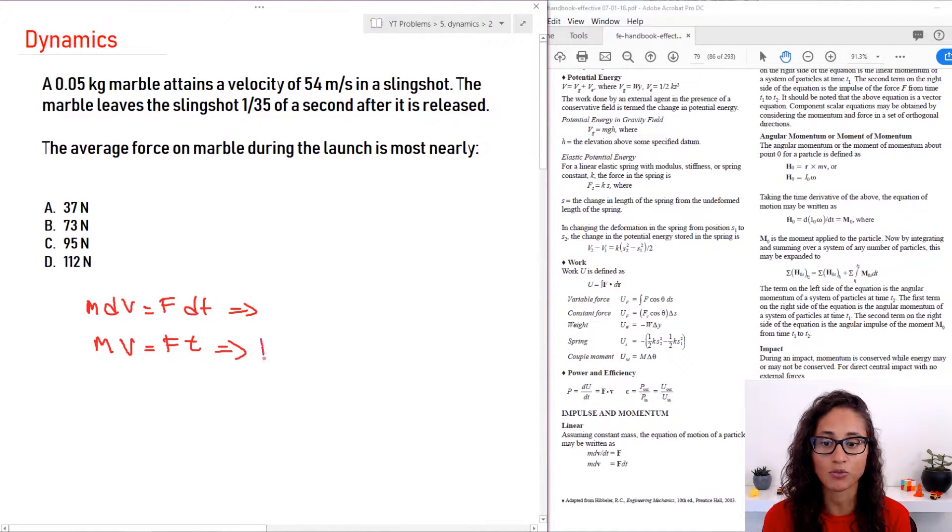But anyway, so now let's solve for f. So I have f is equal to mv over t. That's it, guys.